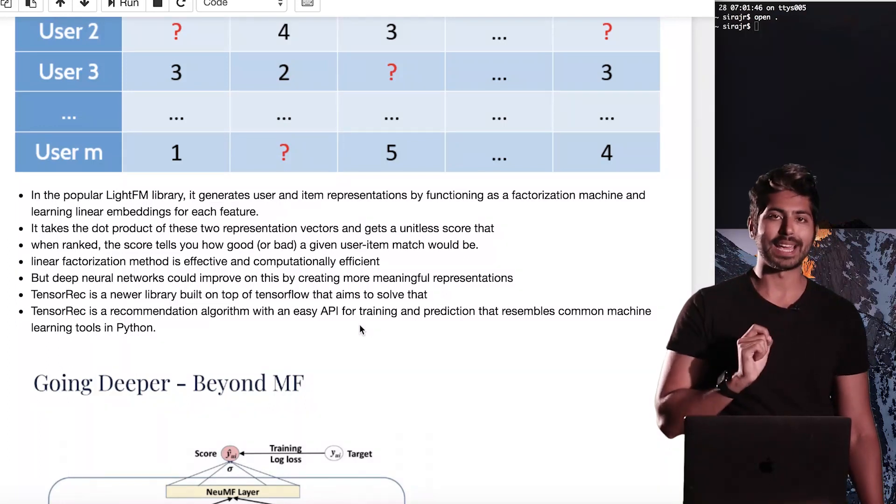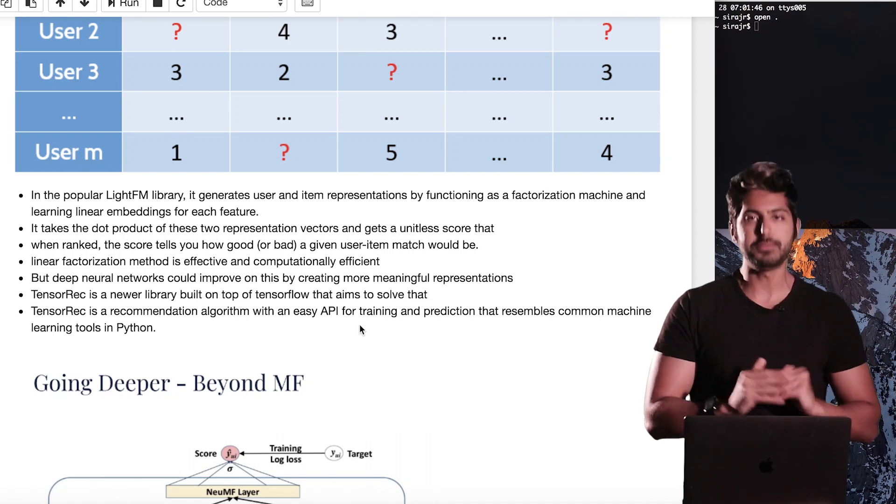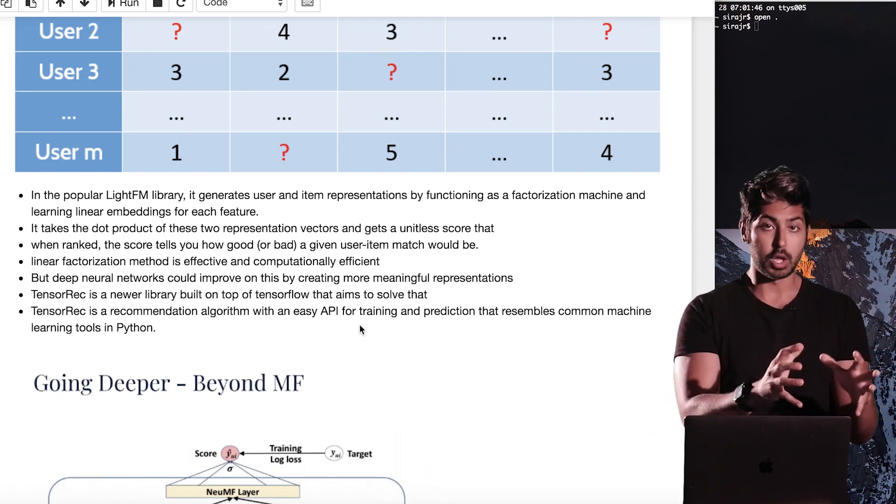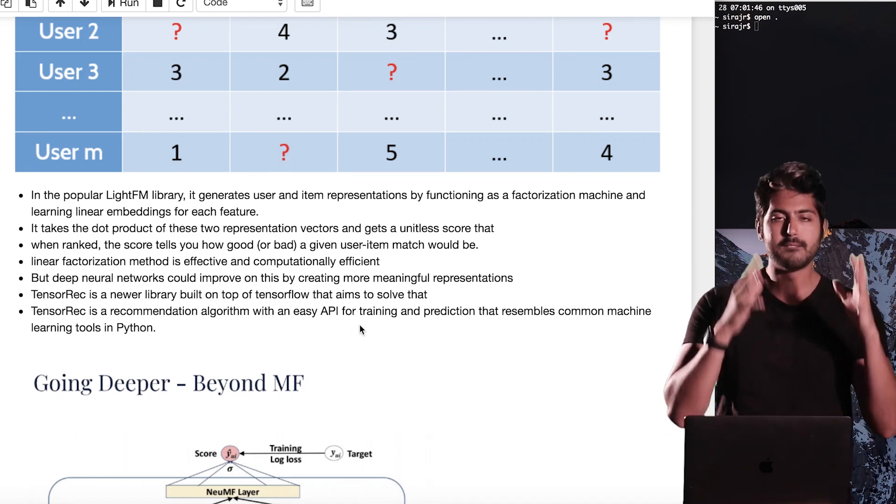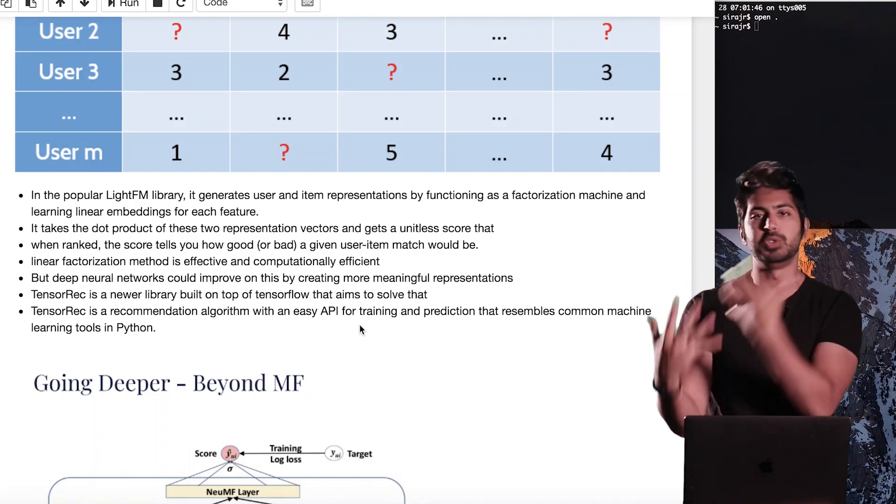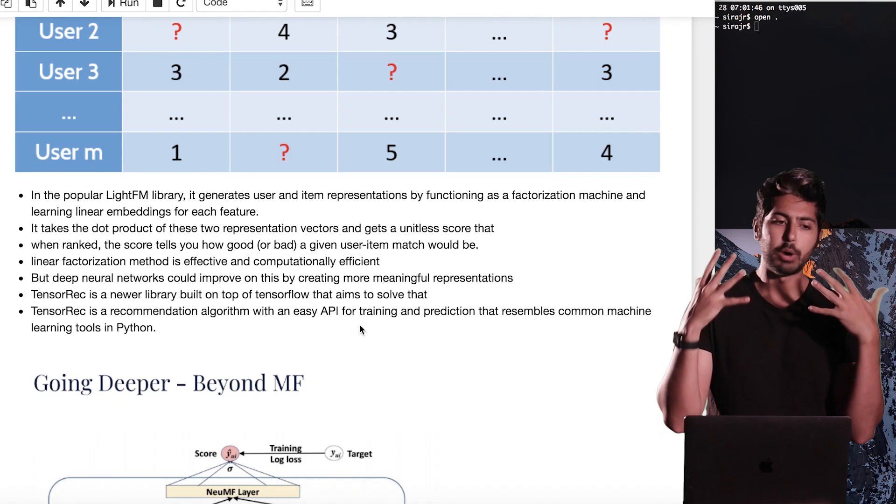And so TensorREC is a library that has a lot of developer activity, and I highly recommend it, built on top of TensorFlow. It allows us to use TensorFlow to build deep neural networks for recommendation engines. This could be to recommend the optimal ads for your users, to recommend products, to recommend whatever it is.